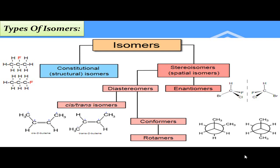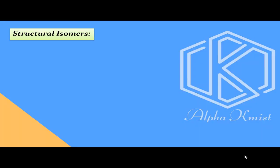Diastereomers کی دوسری type conformers یا conformational isomers ہیں۔ Conformers وہ isomers ہیں جن کی bond connectivity sequence same ہوتی ہے اور انہیں single bond کے گرد rotation سے ایک دوسرے میں interconvert کیا جا سکتا ہے۔ Butane کی structure میں ایک carbon کو circle اور دوسرے کو dot سے show کیا گیا ہے، rotate کرنے سے یہ interconvert ہو جاتے ہیں۔